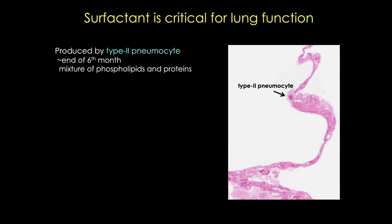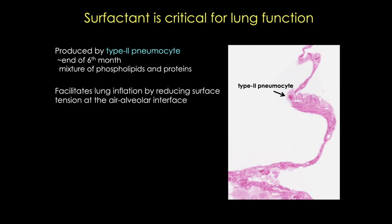Surfactant forms as a film over the internal walls of the alveolar sacs. It's important because it counteracts surface tension forces at the air-alveolar surface and prevents atelectasis, which means collapse of the sacs during exhalation. Type 2 cells, like the one seen here in this histological image, start to produce surfactant at about 20 to 22 weeks in the canalicular stage. But production is really ramping up during the terminal sac stage, since there are now increasing numbers of both sacs and type 2 cells. In addition, the pulmonary vasculature is now becoming more developed.